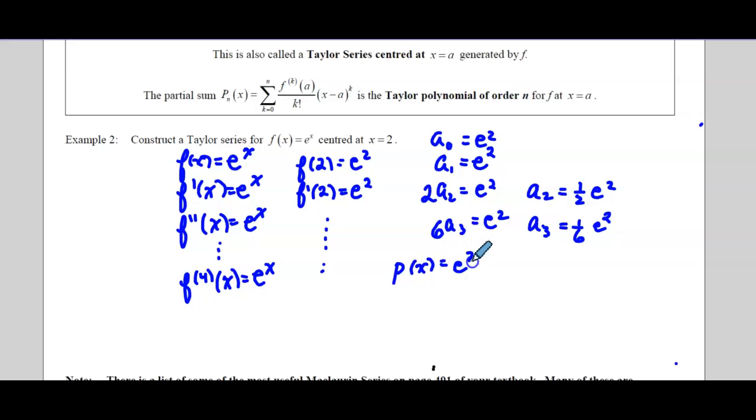So if we were to write out our polynomial, we'd have e² plus e² x, and then it would be x minus 2, and then we'd have e² over 2. You can just combine that to be x multiplied by x minus 2², and etc. You can fill that in. So in terms of summation notation, we'd have n equals 0. If we went to infinity, then we're going to have e², and then x minus 2 to the n, and then over, remember, over n factorial.